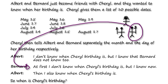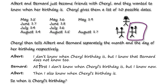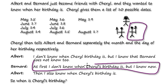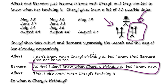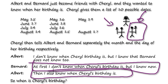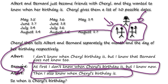The minute Barnard makes this statement, Albert also knows when Cheryl's birthday is. And then Albert says: "Then I also know Cheryl's birthday." Now the minute Albert makes this statement, we all know when Cheryl's birthday is.